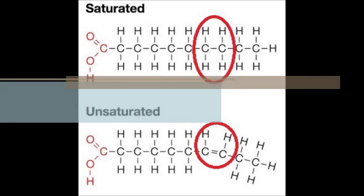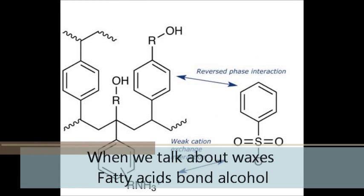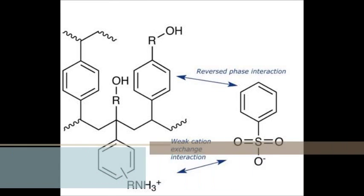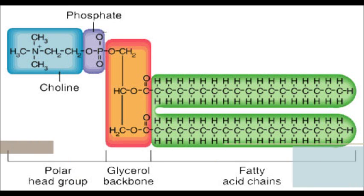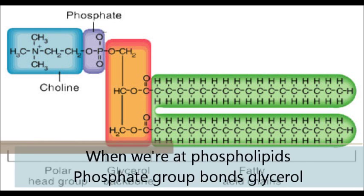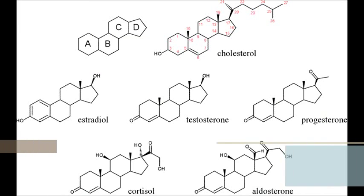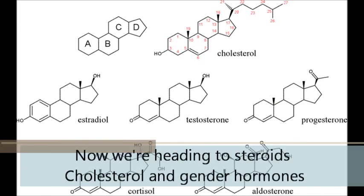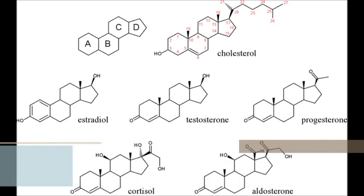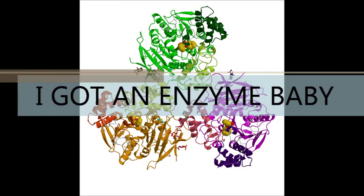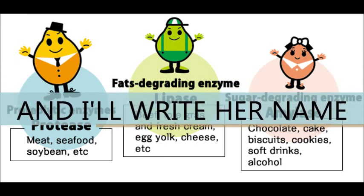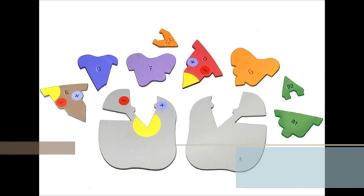Unsaturated fats have carbons that are double bonded. When we talk about waxes, fatty acids bond with alcohol. Phospholipids contain phosphate groups and glycerol. Now heading to steroids — cholesterol and gender hormones.